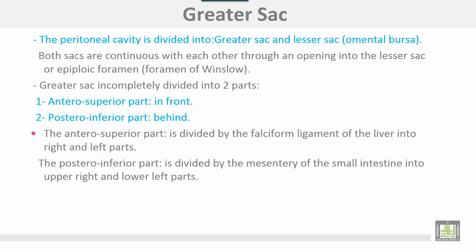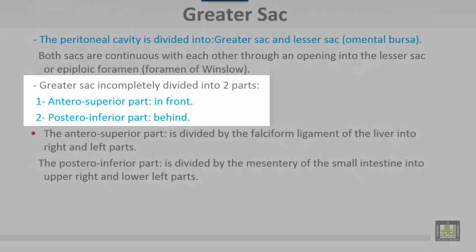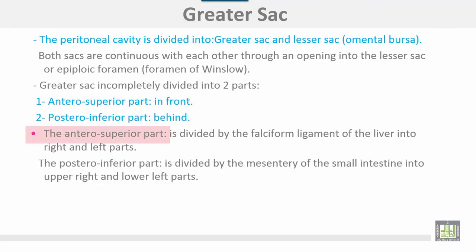The peritoneal cavity is divided into greater and lesser sacs. The lesser sac is sometimes called the omental bursa. Both sacs are continuous with each other through an opening into the lesser sac, sometimes called the epiploic foramen or foramen of Winslow. The greater sac is divided into two parts: an antero-superior part in front and a postero-inferior part behind. The antero-superior part is divided by the falciform ligament of the liver into right and left parts. The postero-inferior part is divided by the mesentery of the small intestine into upper-right and lower-left parts.